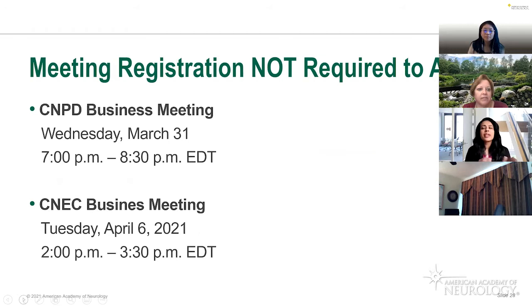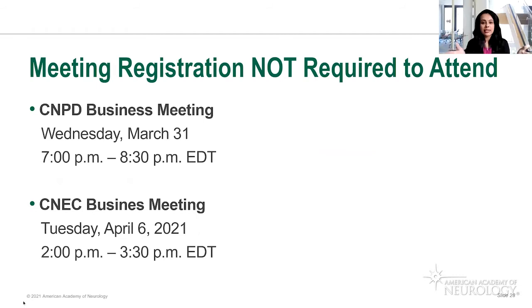These two business meetings would have been in-person at the annual meeting, but we're offering them outside of the meeting because the meeting schedule is condensed. We decided to offer these business meetings for program directors as part of our consortium meetings outside of meeting week. Registration for the annual meeting is not required for these — they're available to you to participate in, similar to the meeting we're having today.